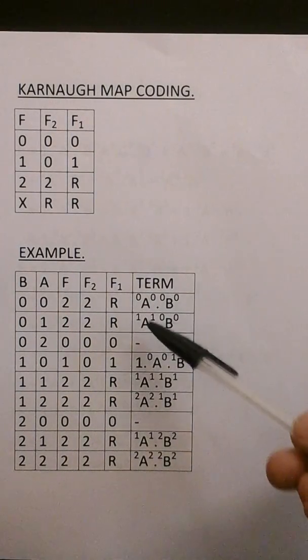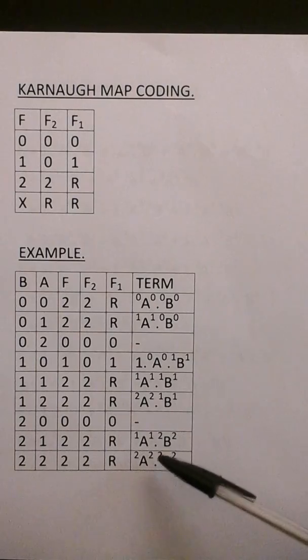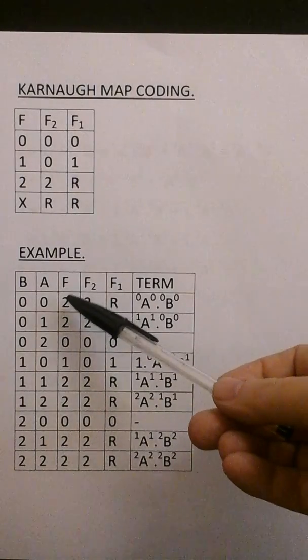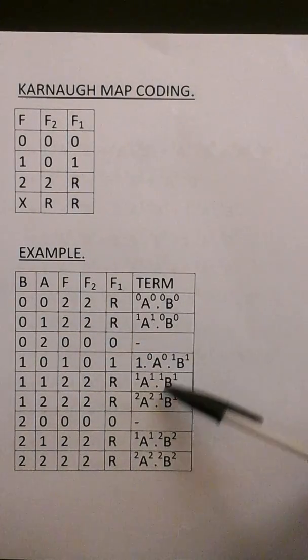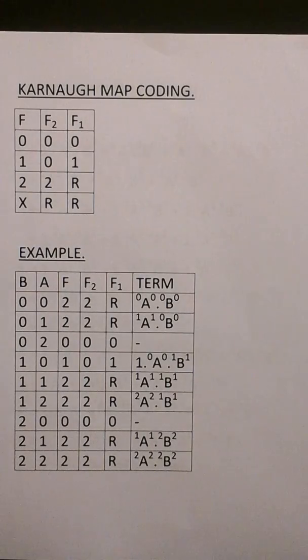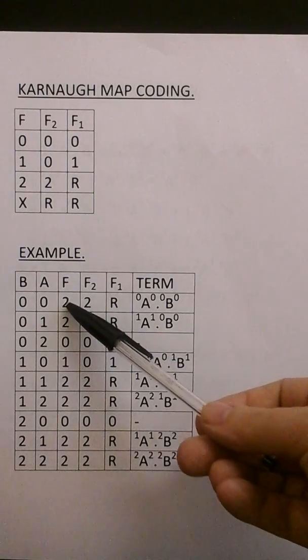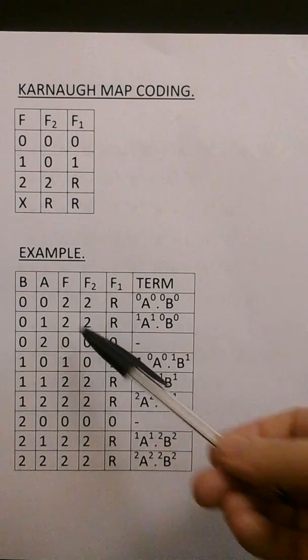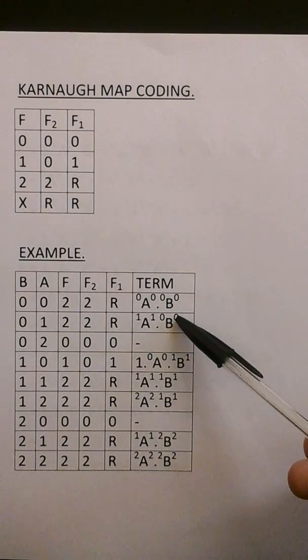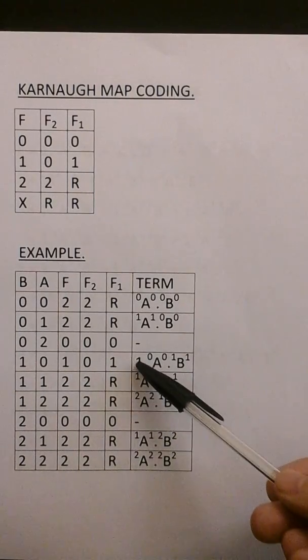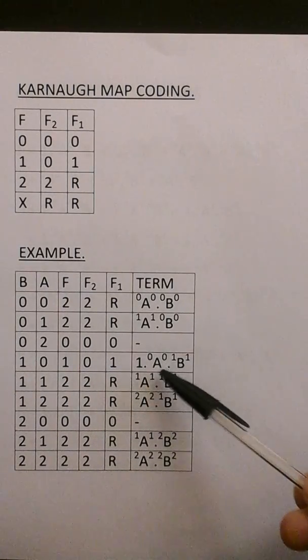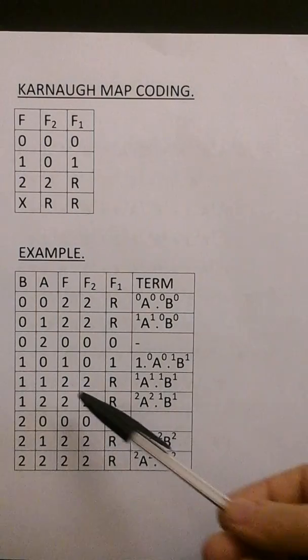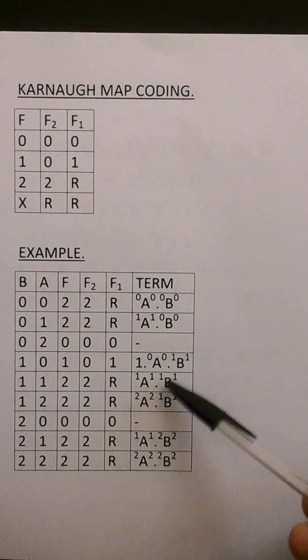I've also written in the term of each expression of the function here. So 2 here is A0, 0 min B0, 0. 2 there is A1, 1 min B0, 0. 1 there is 1 min A0, 0 min B1, 1. 2 here is A1, 1 min B1, 1.